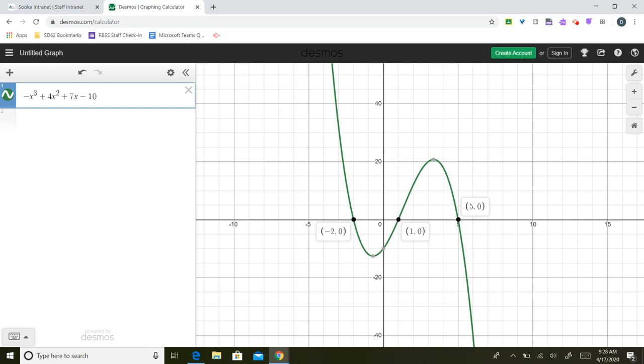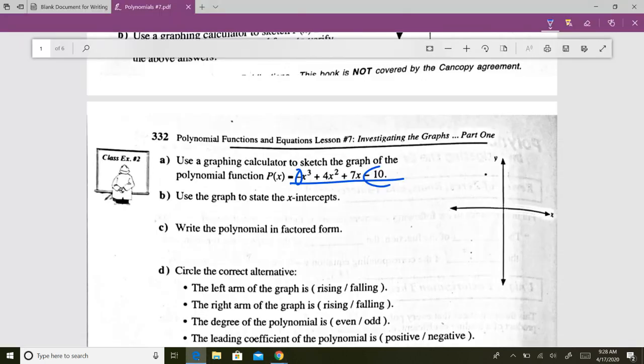There's our x-intercepts. So negative 2, 1, and 5. So going back here, negative 2, 1, 5. We know the graph looks like this. Don't worry about how high these maxes and peaks are. There's no y value on this graph. I'll show you in a sec. There is one that we can determine. But the x-intercepts, negative 2, 1, 5.